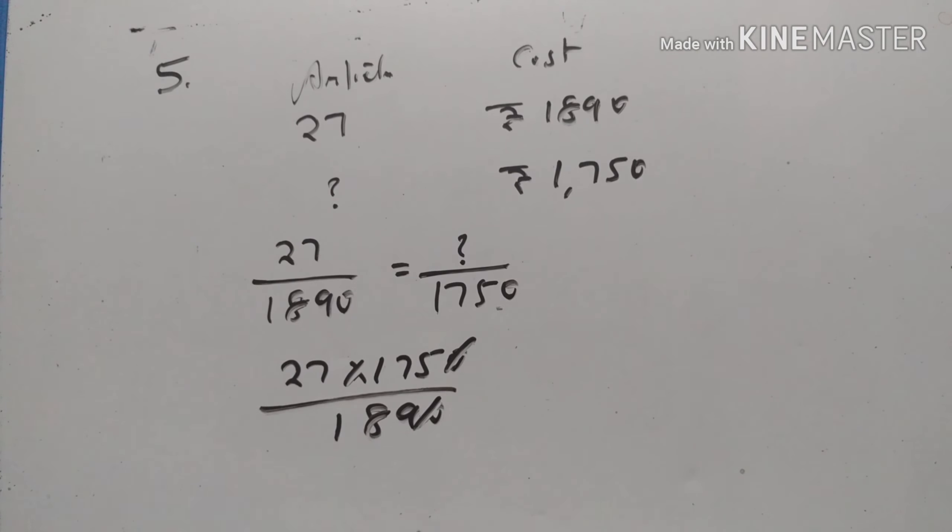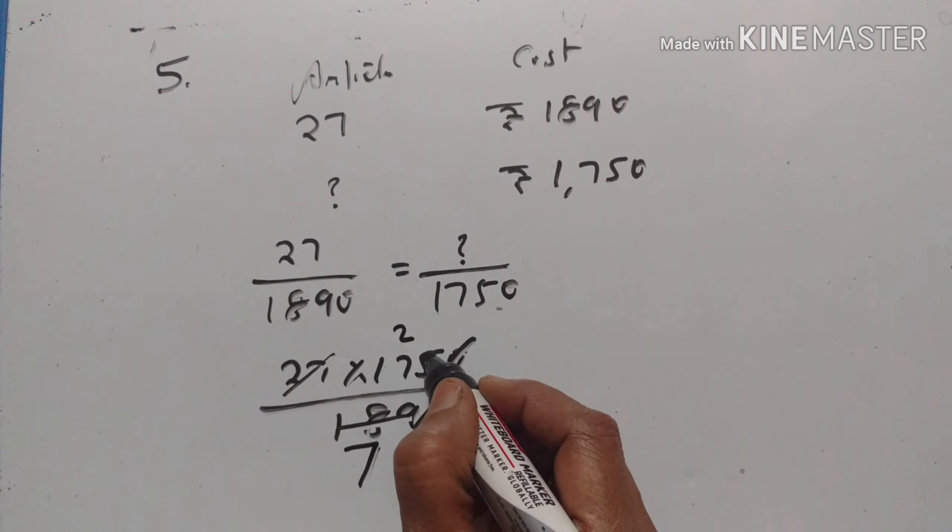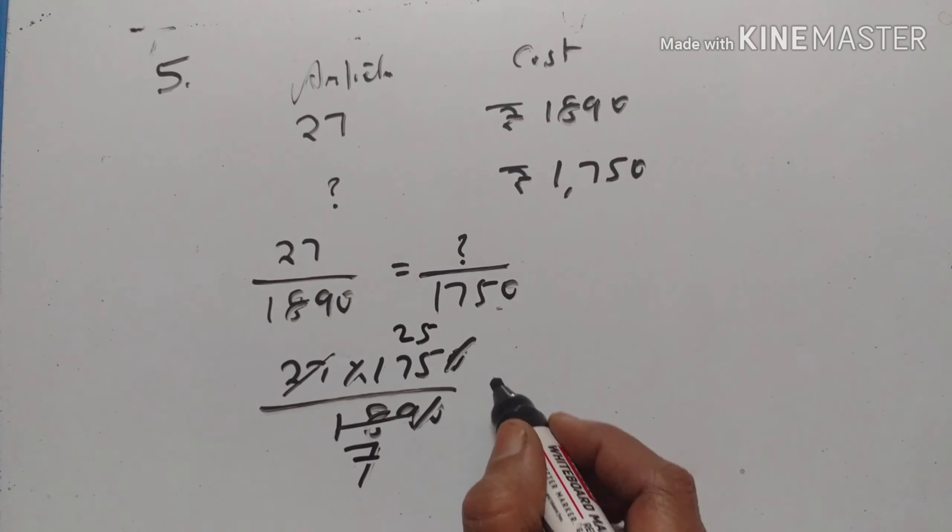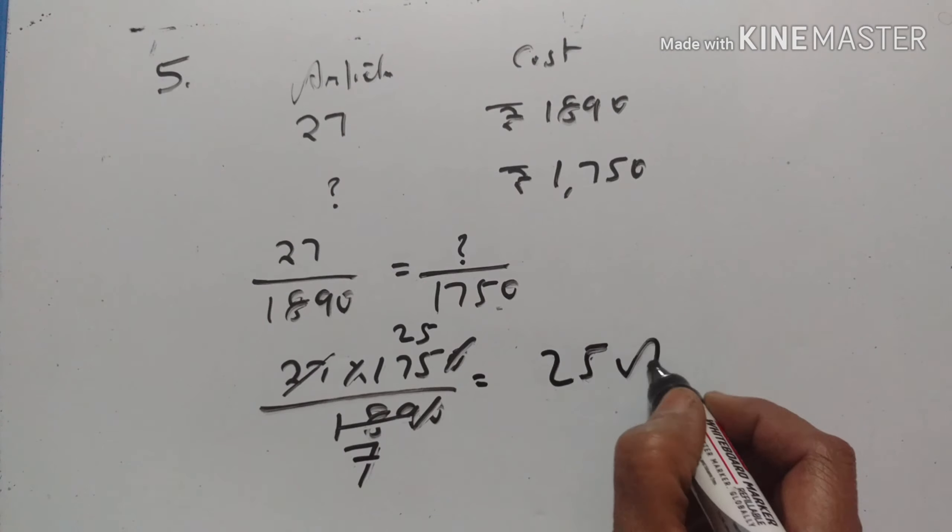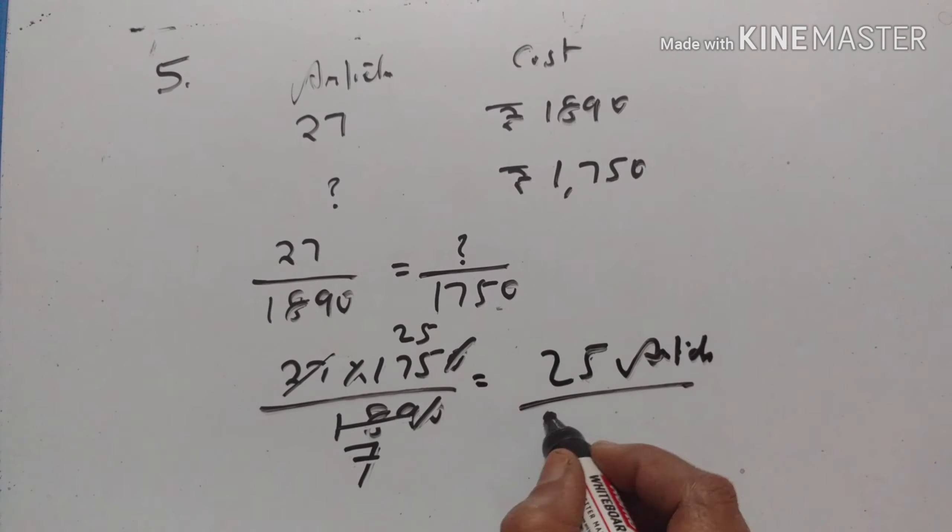So this is 27, 7s are 189, 7 2s are 14, 3 remains, 7 5s are 35. So 25 articles can be bought for Rs. 1750.